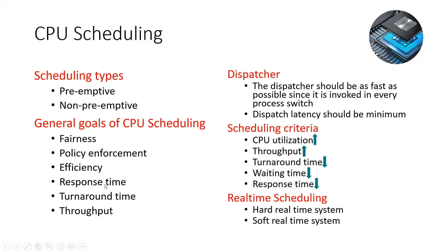Next, we have three important terms: response time, turnaround time, and throughput. These are our goals to achieve. The dispatcher's work should be as fast as possible since it is invoked in every process switch — dispatching from one state to another. Dispatch latency should be minimum — the shortest, smallest, minimum possible — so that we can achieve the efficiency of the CPU.